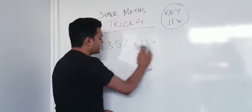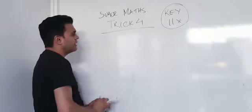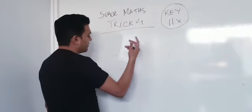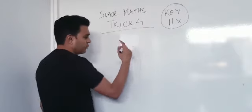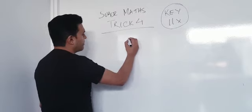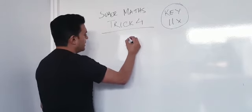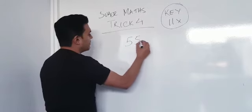Now, what do we do if the consecutive numbers add up to more than 10? We then carry them. If you've got something like 55 times 11.